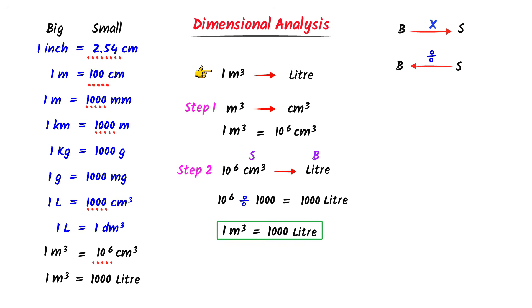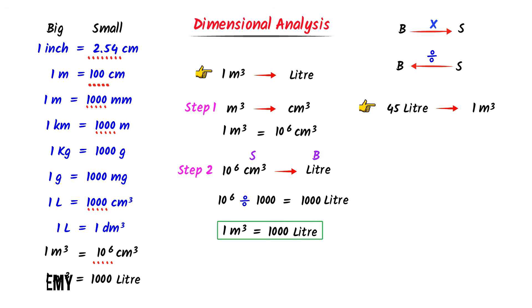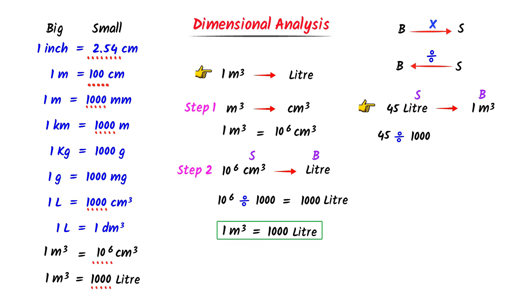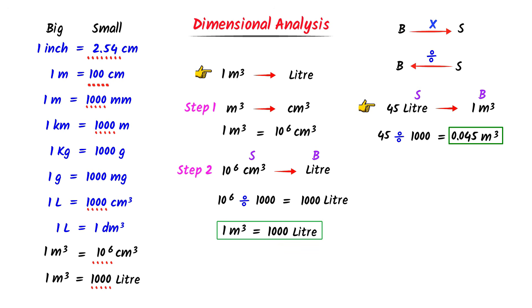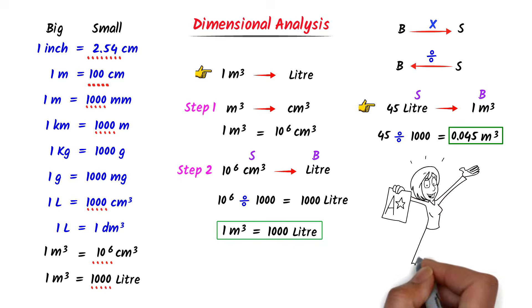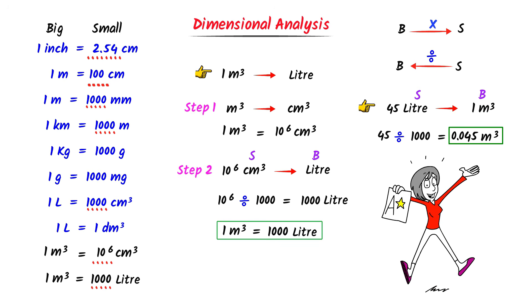I write this relationship here. Lastly, convert 45 liters to meter cube. Liter is a smaller unit and meter cube is a bigger unit. I divide 45 by the conversion factor, which is 1000. After calculation, I get 0.045 meter cube. Thus, 45 liters is equal to 0.045 meter cube. Therefore, using this trick, we can easily learn dimensional analysis. I hope that you have learned all these important concepts.